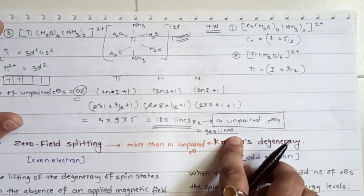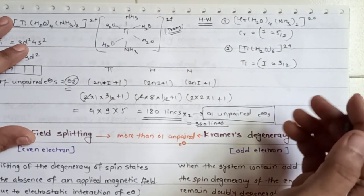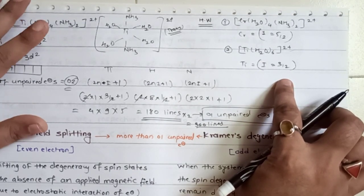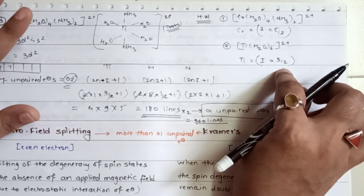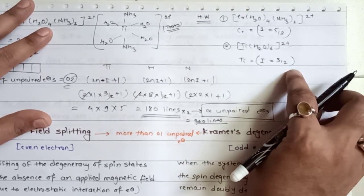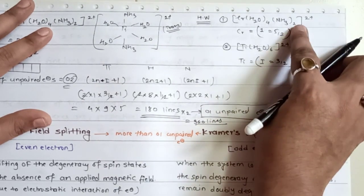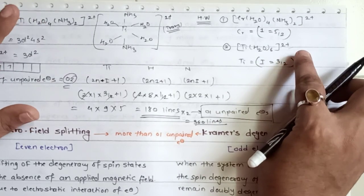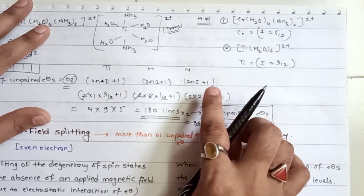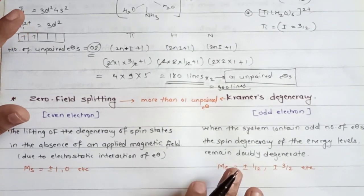I hope you now understand the Dragos rule through all these examples. I am giving you homework: two questions to solve and comment to me how many hyperfine lines you get for the given transition metal complexes. I have given you chromium I-value and titanium I-value. First draw the complex structure, see which components participate in splitting, then follow the 2nI + 1 rule.